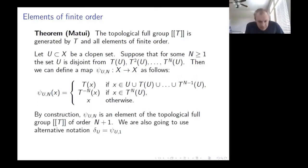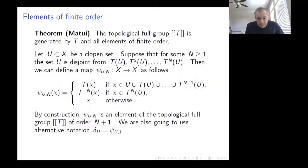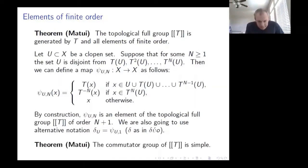Of special interest are elements of order 2. When you have just U and t(U), this generalizes a transposition — specifically a transposition of two neighboring elements. I denote this delta_U, where delta is the Greek letter for 2.